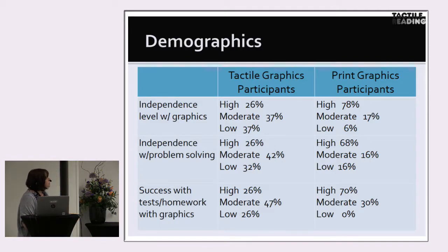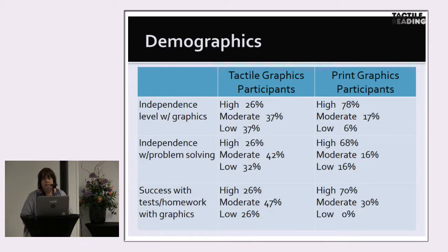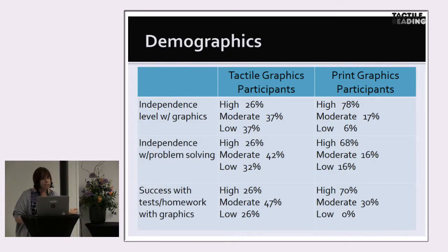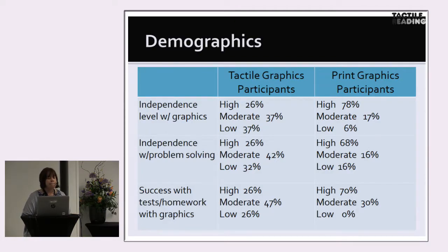Teachers were also asked to rate students' independence level with graphics, independence level with problem solving, and success with tests and homework involving graphics. For tactile graphics users, most fell into the moderate category: 37% at moderate independence with graphics, 42% moderate for problem solving, and 47% at moderate level for success with tests and homework. In comparison, the low vision print graphic users were rated by their teachers more frequently as highly independent, with about 70% in the high category for most of those areas.